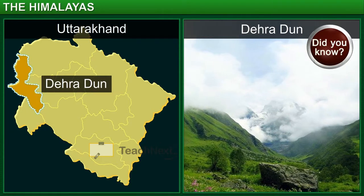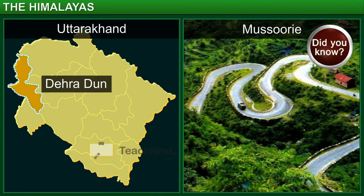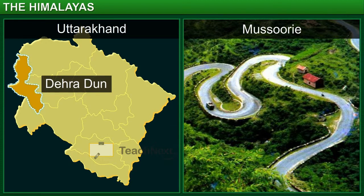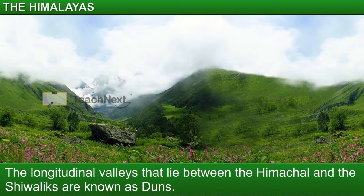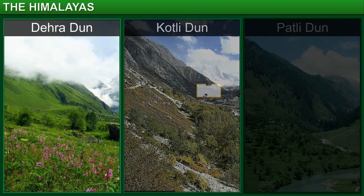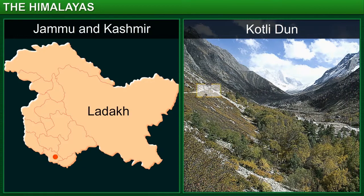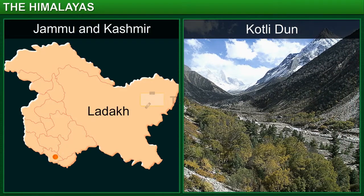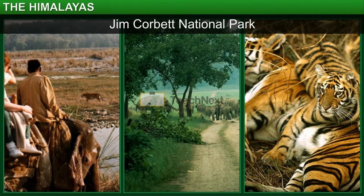You may have heard of Dehradun. The famous hill station of Mussoorie is located in the Dehradun Valley in the state of Uttarakhand. The longitudinal valleys that lie between the Himachal and the Shivaliks are known as Doons. That is how the most famous valleys, including Dehradun, Kotlidun, and Patlidun, got their names. Kotlidun is located in the Jammu region and is known for its scenic beauty. The Jim Corbett National Park is located in the Patlidun region.